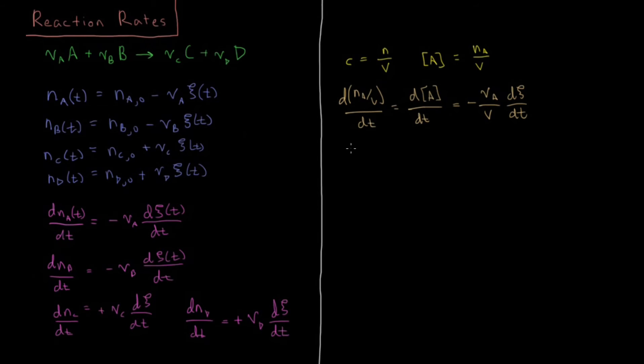Okay, so we have the analogous values again for B, C, and D. I'll just quickly write all of those out: minus nu B over V, dC/dt.